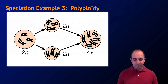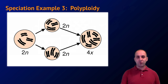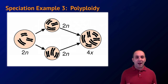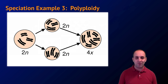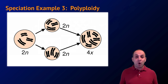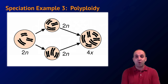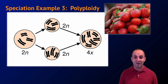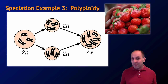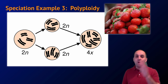The last example is from the plant world: polyploidy. Polyploidy refers to a genetic mutation where entire extra sets of chromosomes end up in a cell. Animals can't really tolerate this, but plants can tolerate it quite easily. Instead of making gametes with three chromosomes apiece, you wind up with a zygote that has twice the normal number of chromosomes. This is actually very common in commercial fruits — the strawberries you buy in the store can have as many as four times the normal number of chromosomes compared to wild strawberries.